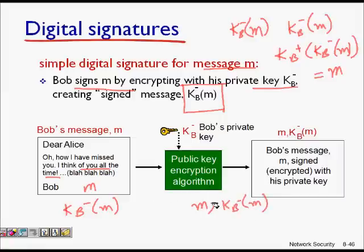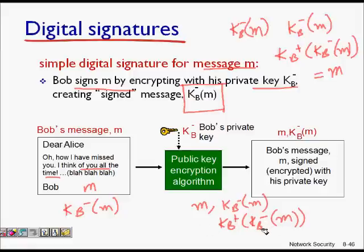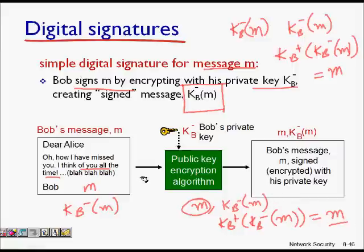To verify it is Bob who sent the message, Alice applies Bob's public key kb plus to the encrypted message kb minus of m, and she gets the message back. This shows it is verifiable — she has the original message, and when she applies the public key to the encrypted message she gets the same message, confirming that only Bob could have sent it.